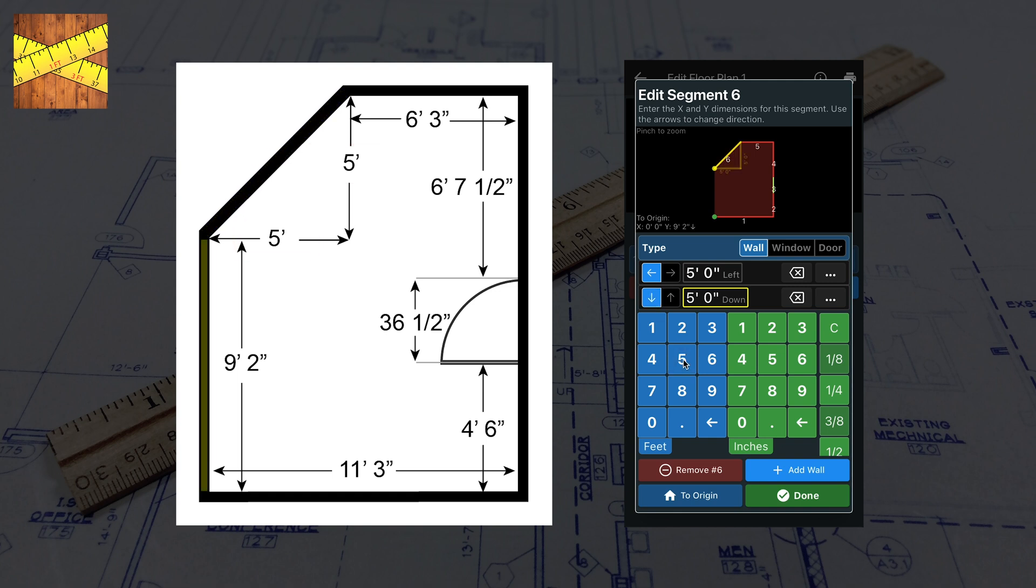With one wall remaining, you can either add another wall and enter the dimension, or use the Origin button to complete your floor plan.